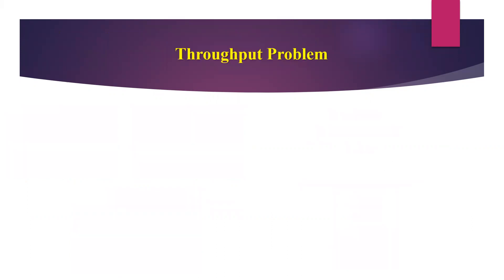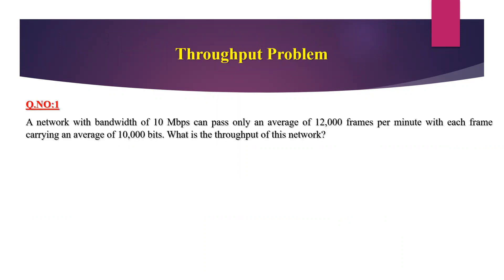First, we will see the throughput problem. Question number one: a network with bandwidth of 10 Mbps can pass only an average of 12,000 frames per minute, with each frame carrying an average of 10,000 bits. So what is the throughput of this network? We have to find out the throughput of this network.